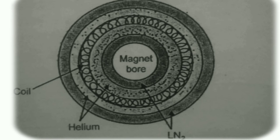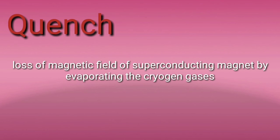Another important concept is quench. Quench is the loss of the magnetic field of a superconducting magnet caused by evaporation of the cryogen gases. If you want to destabilize the superconducting magnet, you perform a process called quenching, which causes this loss of magnetic field by evaporating the cryogen — which is the helium and nitrogen gas. The process is called quenching.